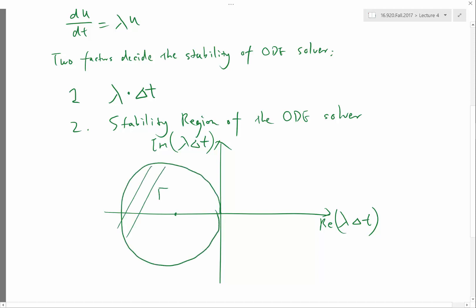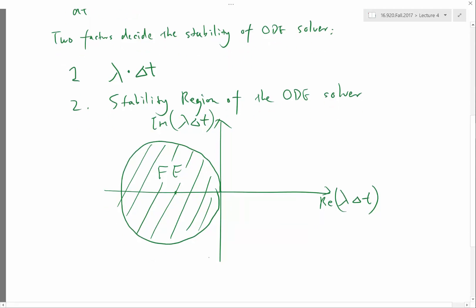For example, forward Euler is stable in this region. So this region is the region for which forward Euler is stable. And as another example, what is the region for which an exact ODE solver is stable? The left part of the entire complex plane exactly, so the whole left plane would be the stability region of an exact solver.